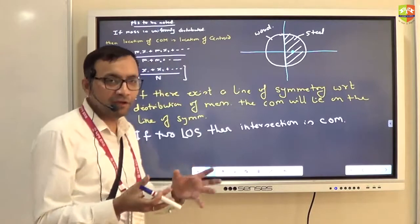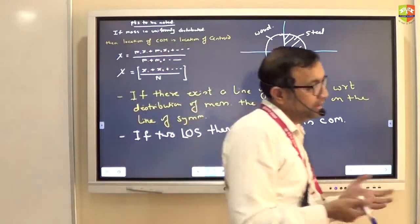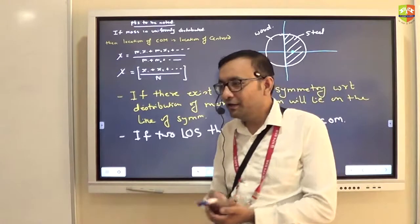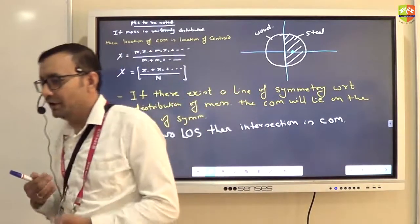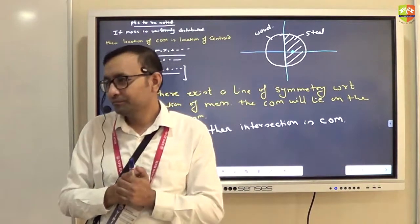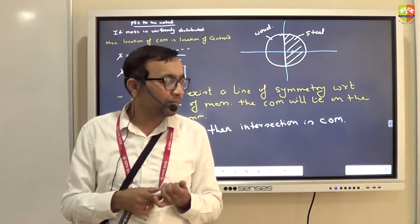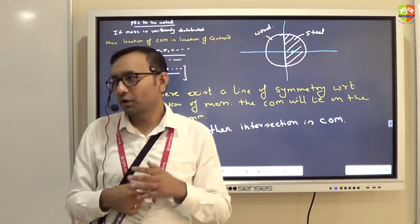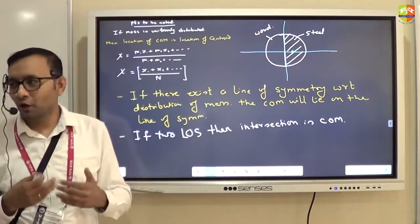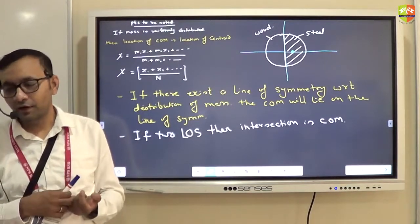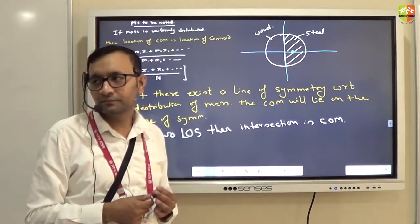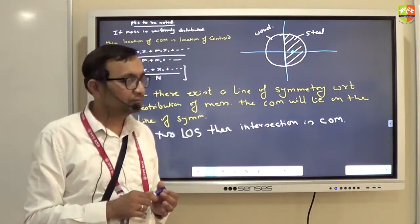The center of mass of a ring is at its center. Center of mass of a sphere is at its center. For a rod with uniform mass distribution, the center of mass is at the center of the rod. For a cube, it is the intersection of the body diagonals. For a rhombus and a parallelogram, it is again the intersection of the diagonals. These are common-sense results.